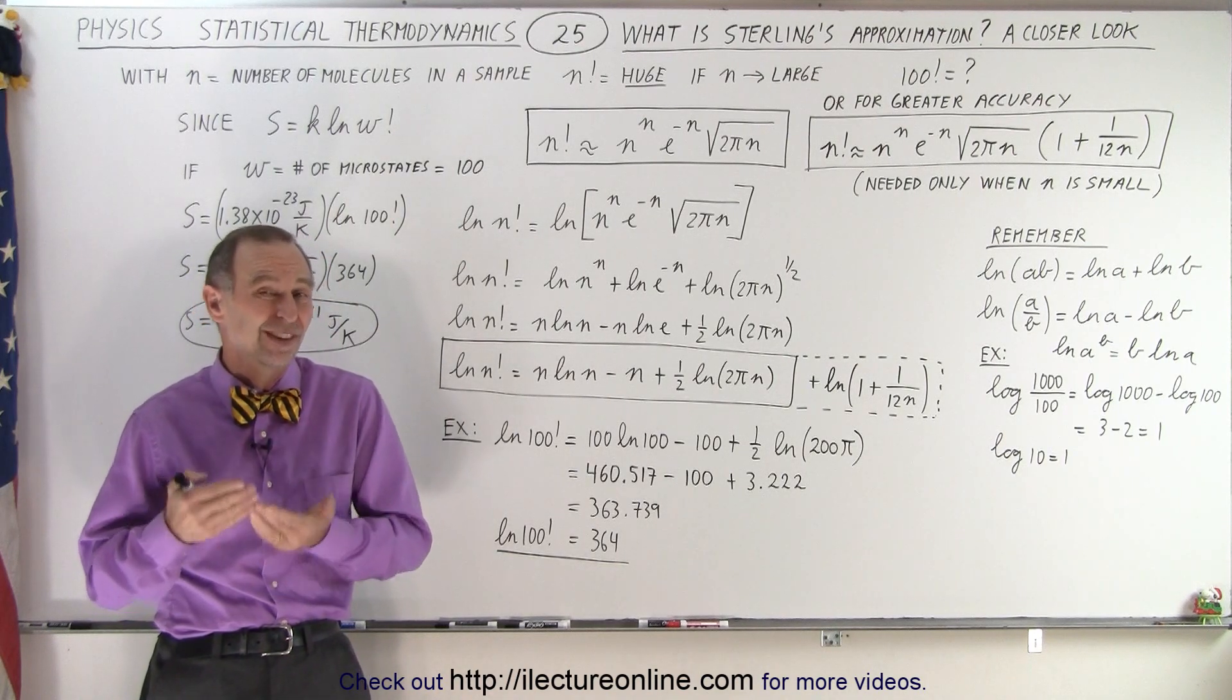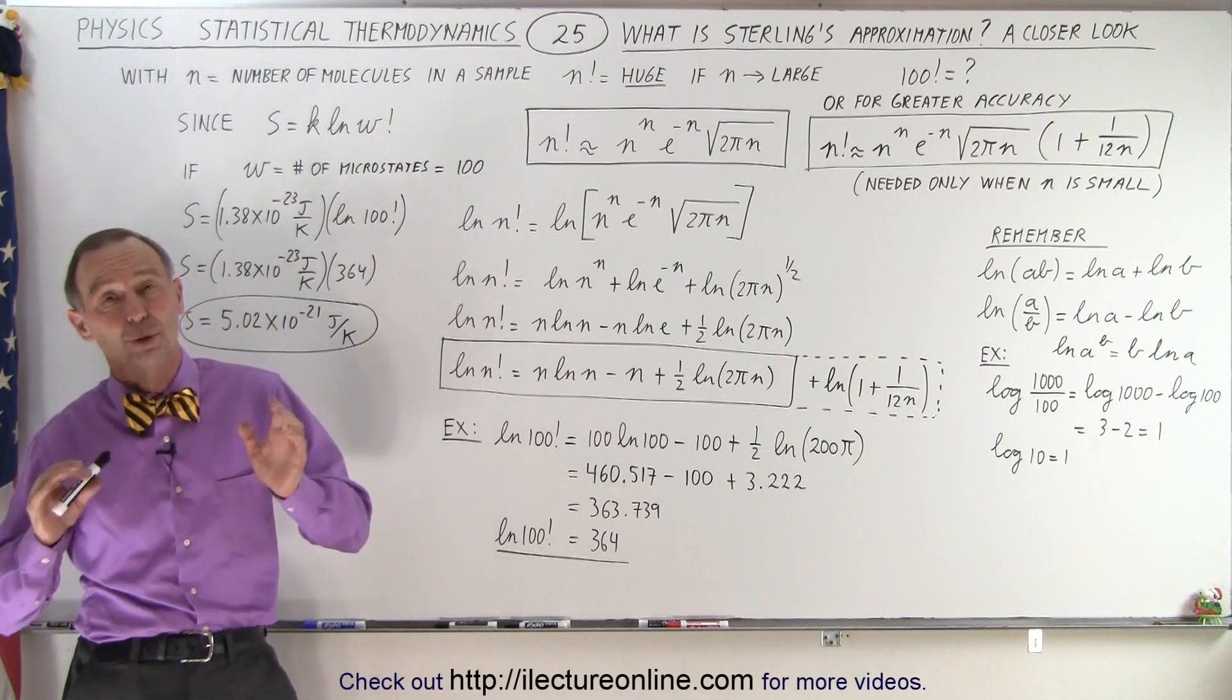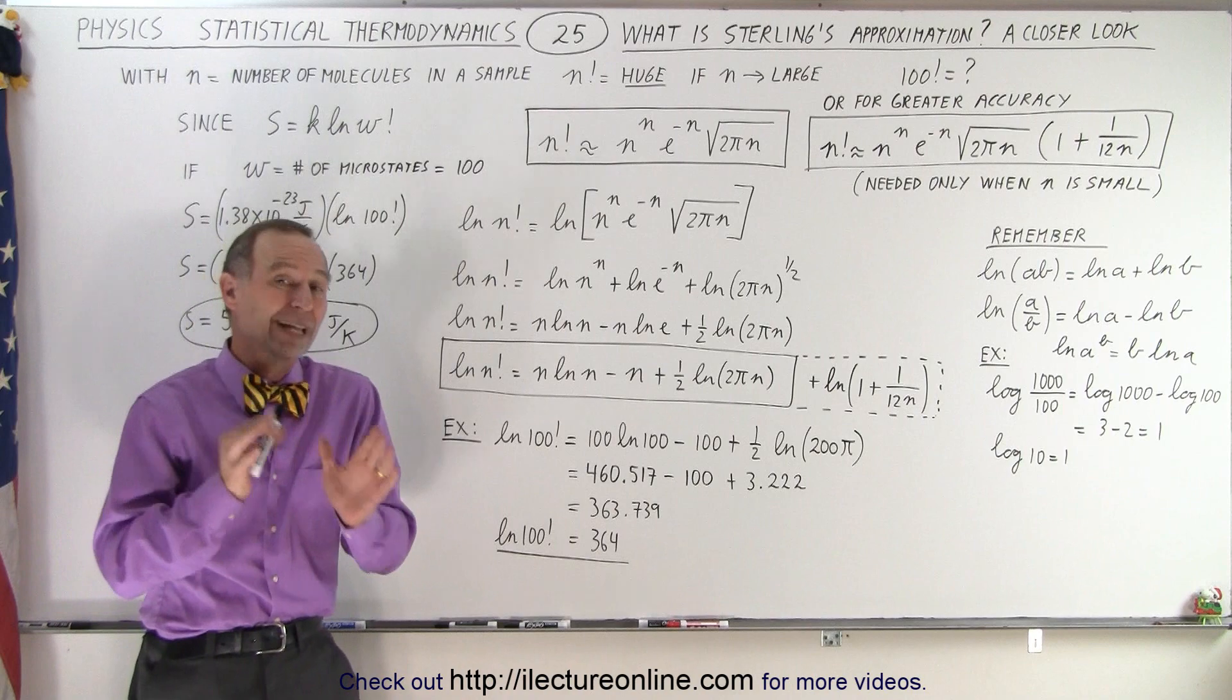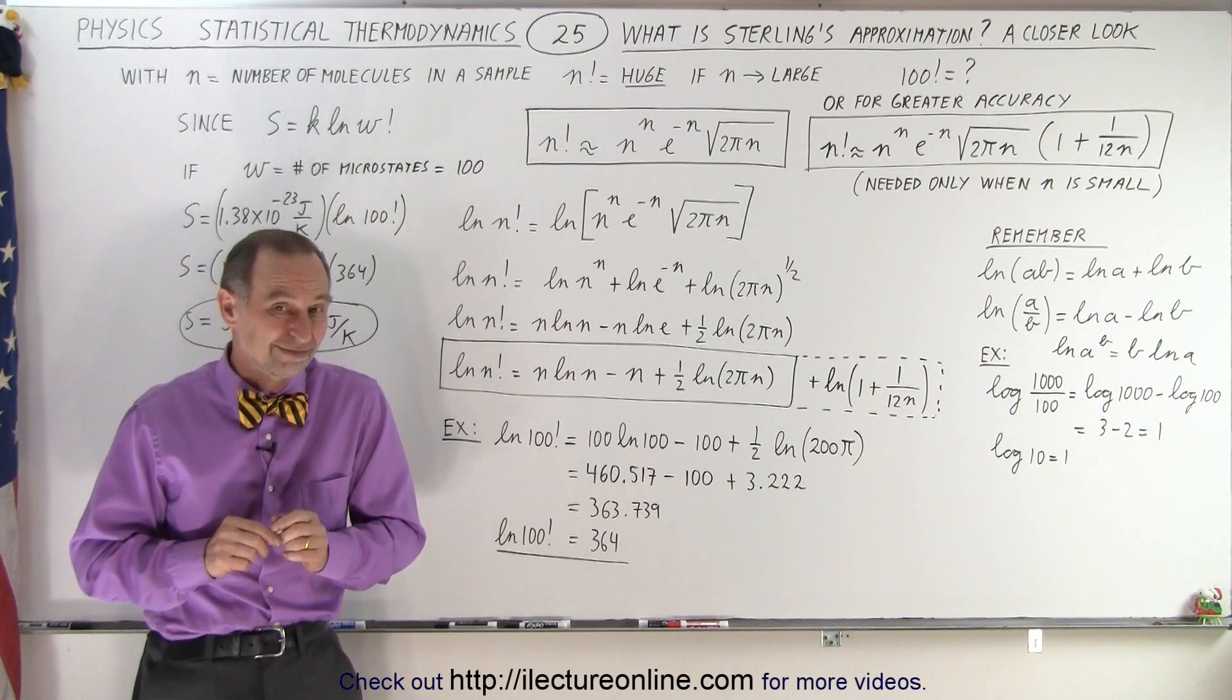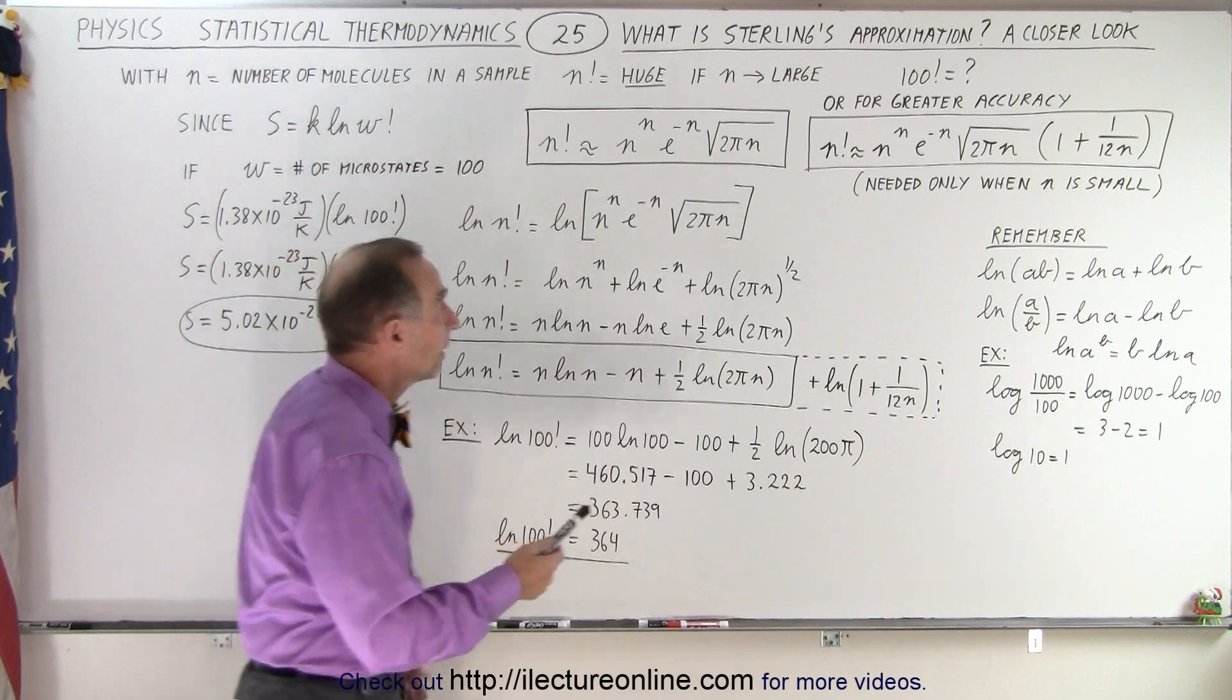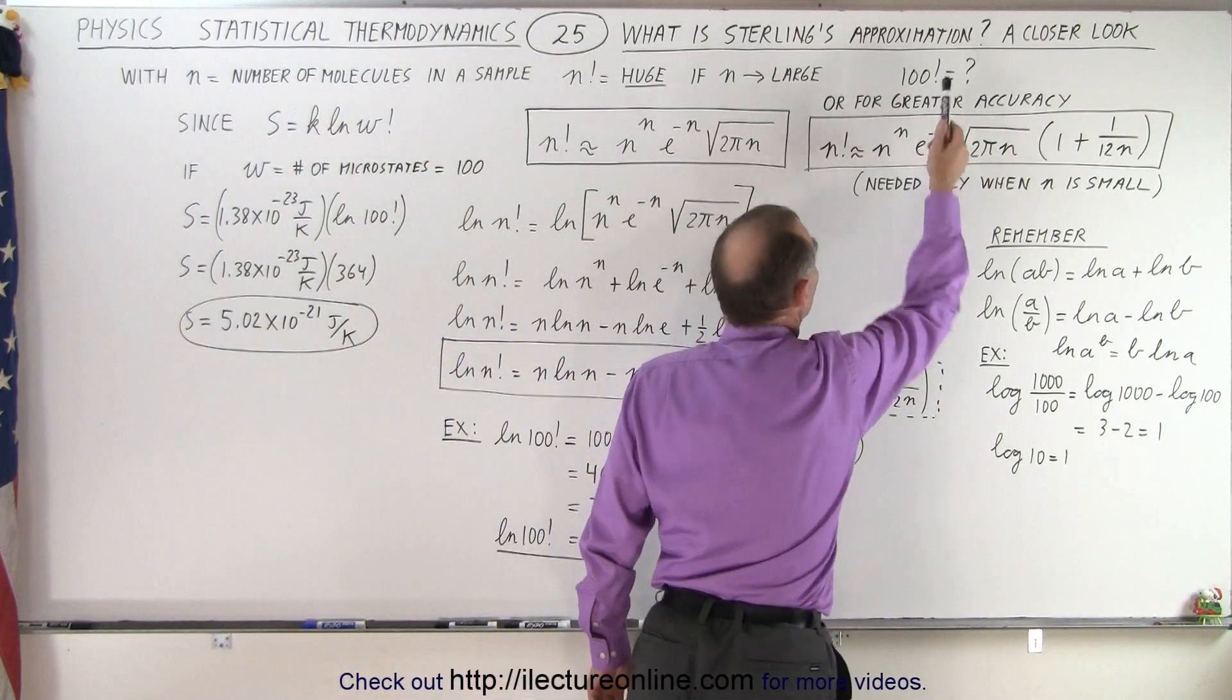Why do we need Stirling's approximation? Well, it turns out in statistical thermodynamics sometimes we work with enormously big numbers. And when the number of microstates gets to be quite large, and it doesn't even have to be all that large to get us into trouble, for example,